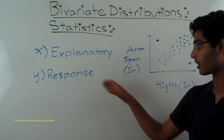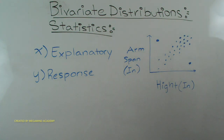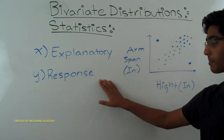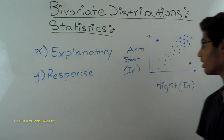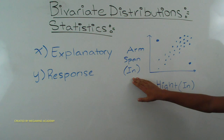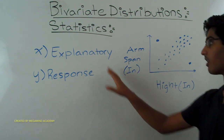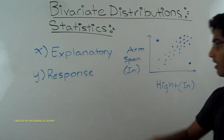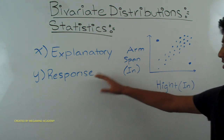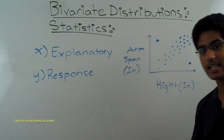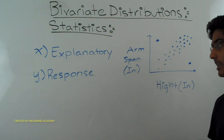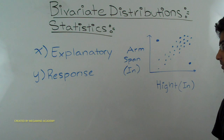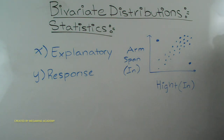To recap: in bivariate distributions we have two variables — explanatory and response — and both are present in one bivariate distribution. The response variable depends on the explanatory variable. The response variable goes on the y-axis and is the dependent variable; the explanatory variable goes on the x-axis and is the independent variable.